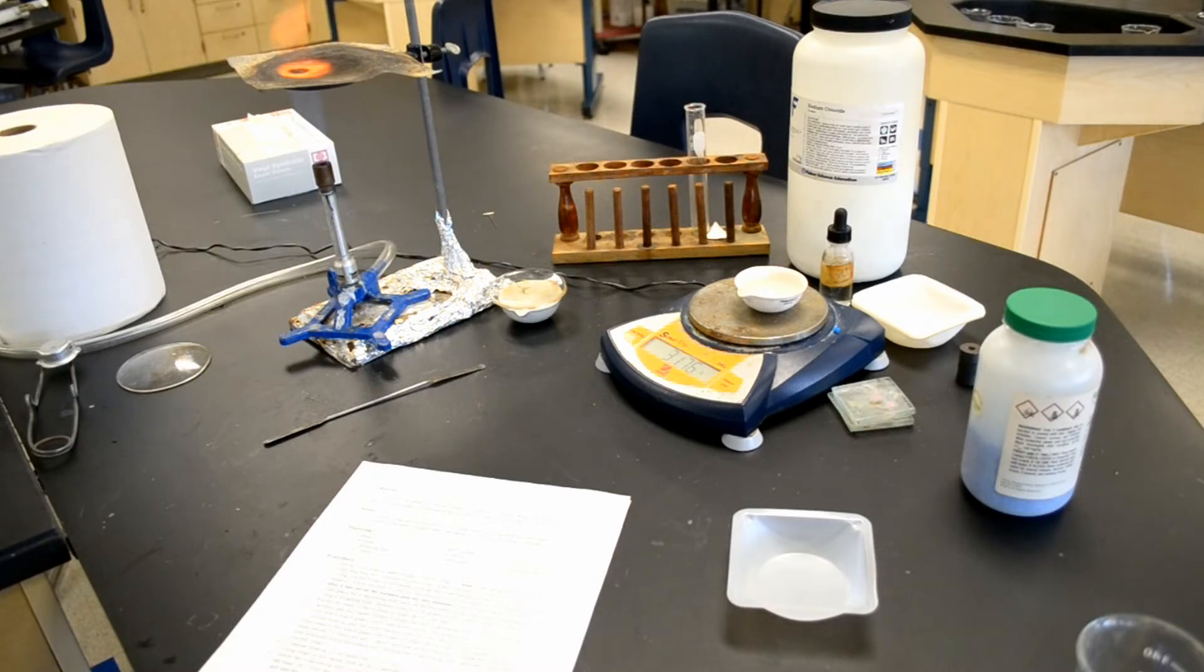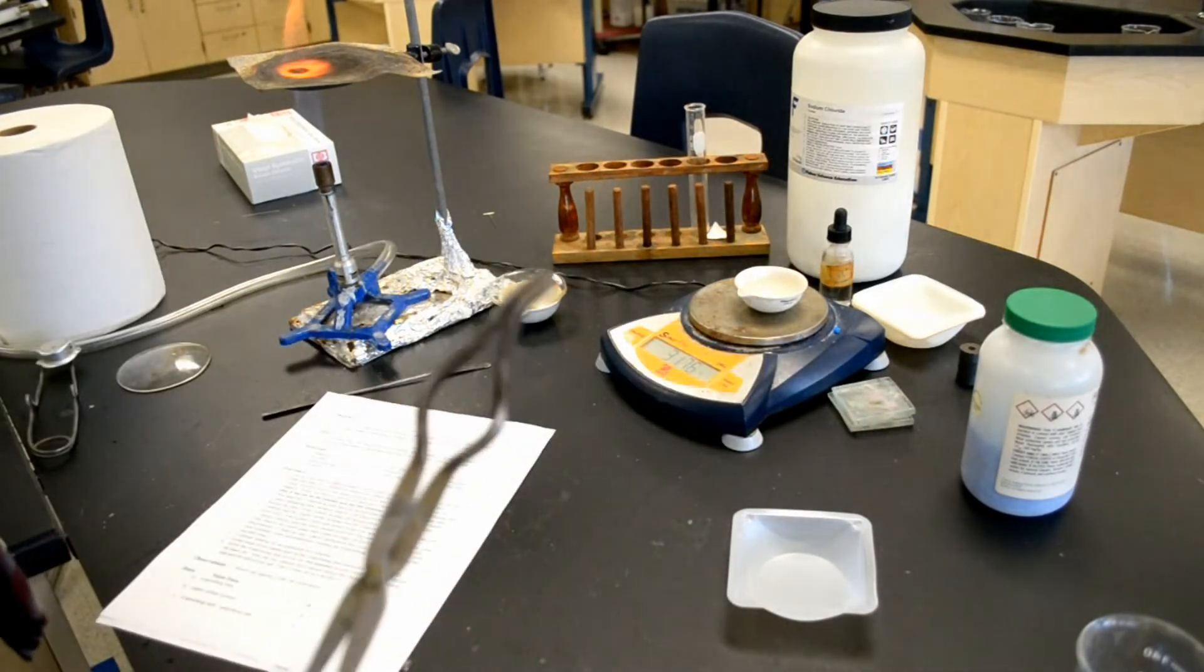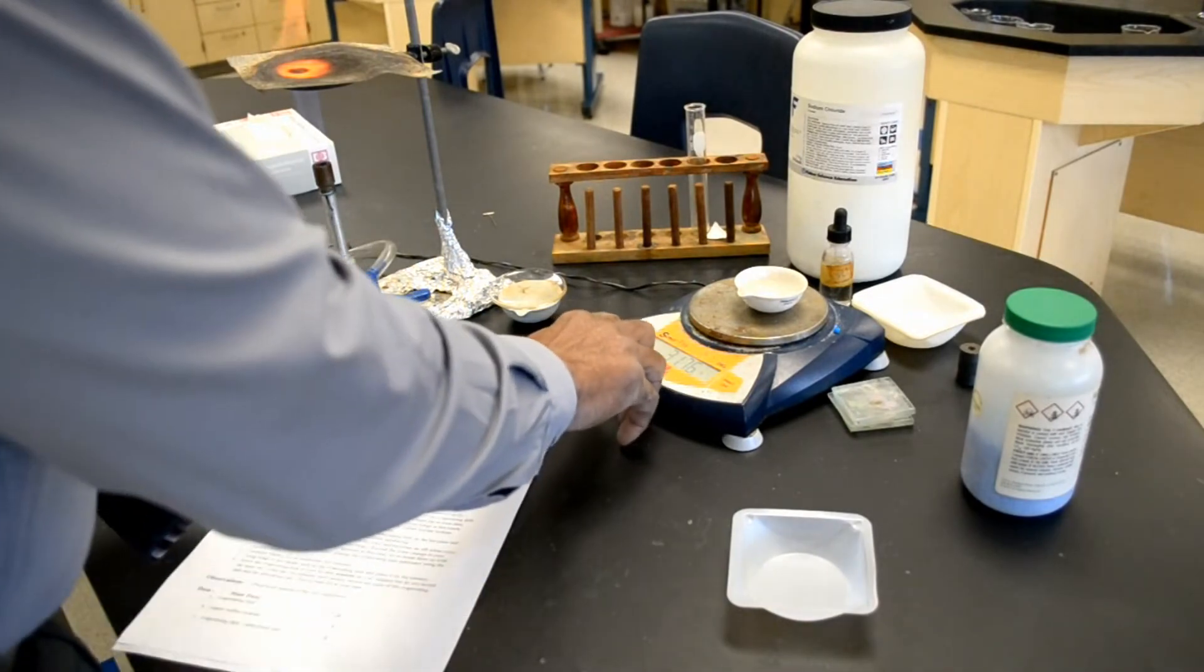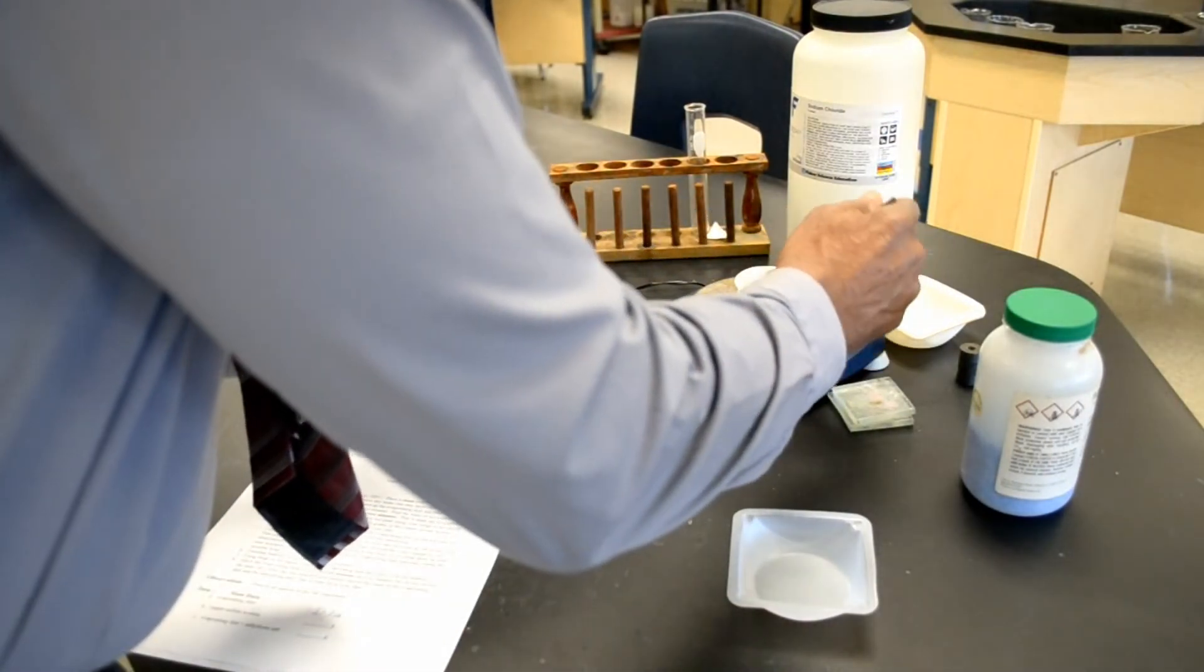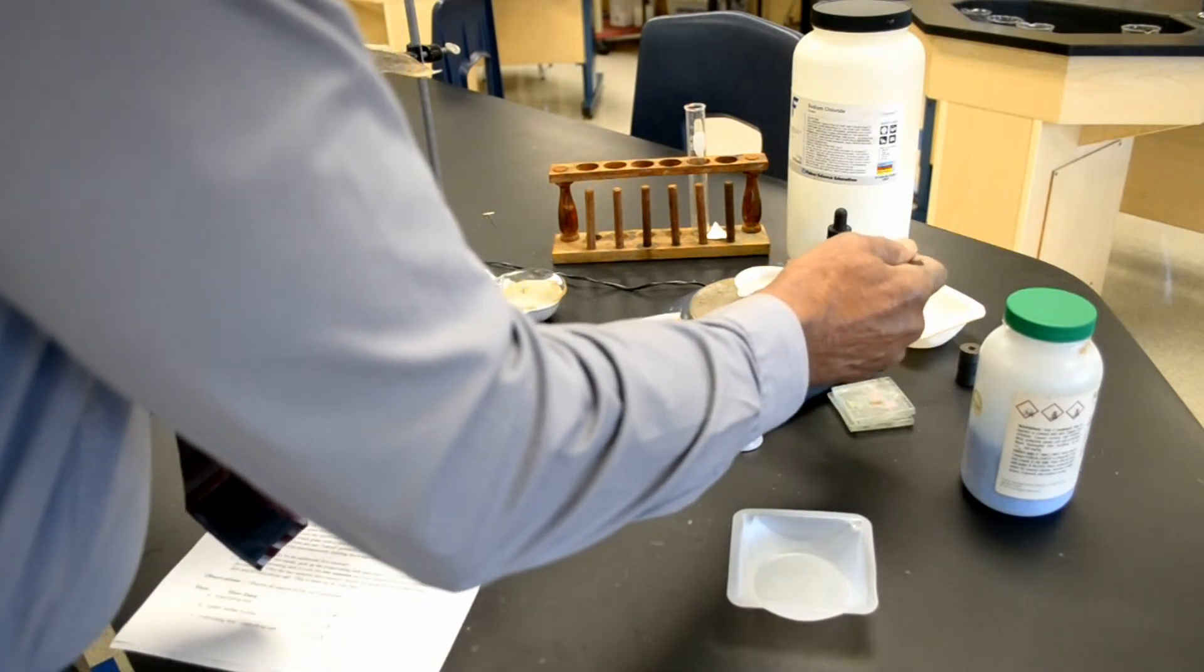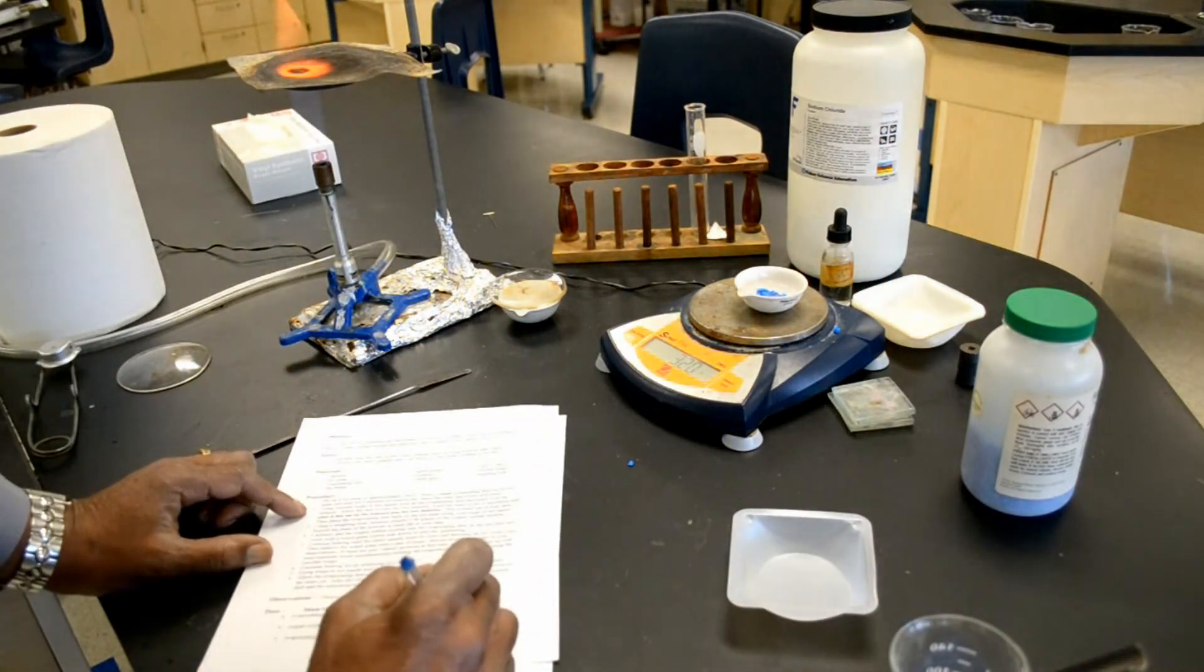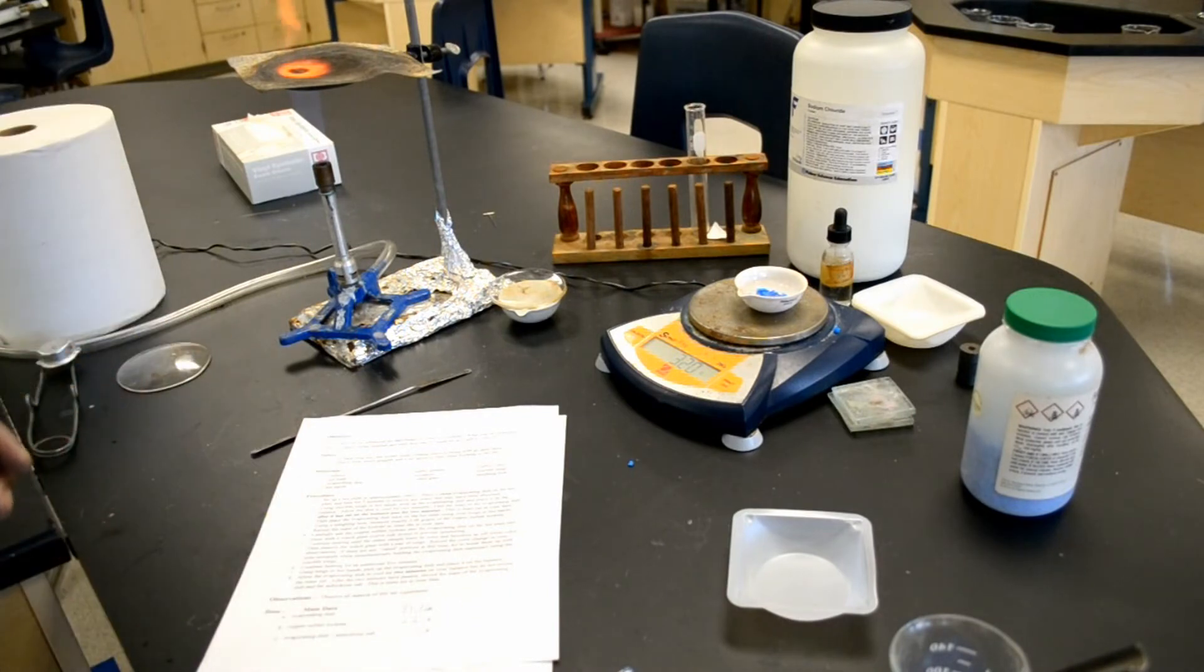Place the evaporating dish back on the hot plate using tongs or hot hands. Once again, we're not using a hot plate, so we're going to be using a Bunsen burner, but I'm actually not going to place it back on the Bunsen burner. Now, I'm actually going to weigh out 2 grams of the hydrate now. I'm actually going to weigh out 3 grams because the more mass, the more accurate the results. I actually have 3.2 grams, so 3.2 grams is the mass of the hydrated copper sulfate.